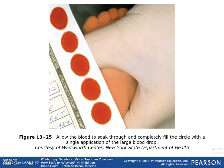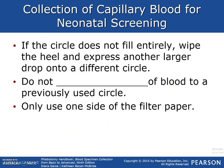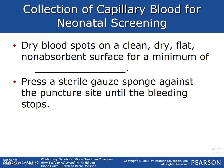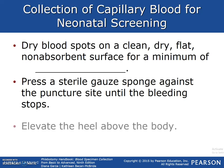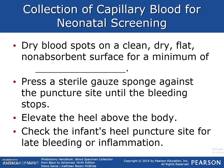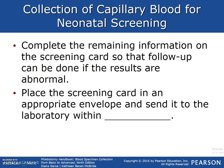Allow the blood to soak through and completely fill the circle with a single application of a large blood drop. If the circle doesn't fill entirely, wipe the heel and express another large drop onto a different circle — do not add a second drop to a previously used circle, and use only one side of the filter paper. Dry blood spots on a clean, dry, flat, non-absorbent surface for a minimum of 4 hours, then press a sterile gauze pad against the puncture site until bleeding is stopped. Elevate the heel above the body and check the puncture site for late bleeding. Complete the remaining information on the screening card and send it to the laboratory within 24 hours.